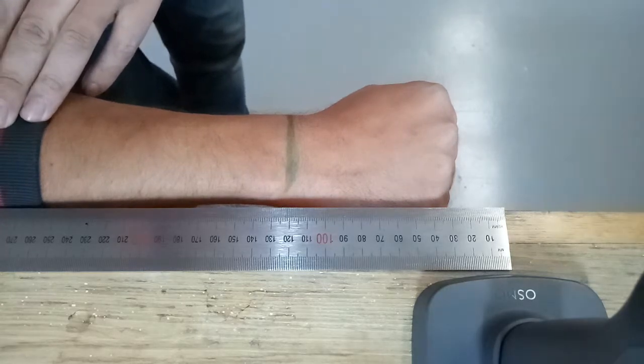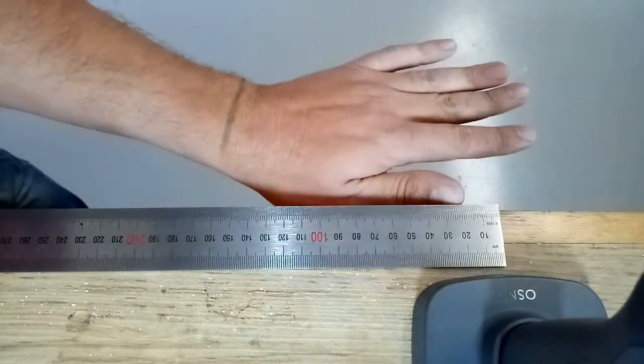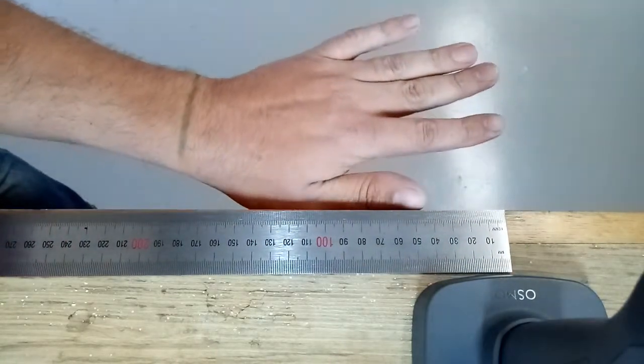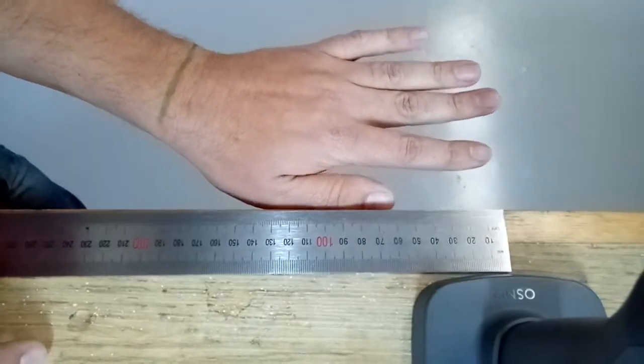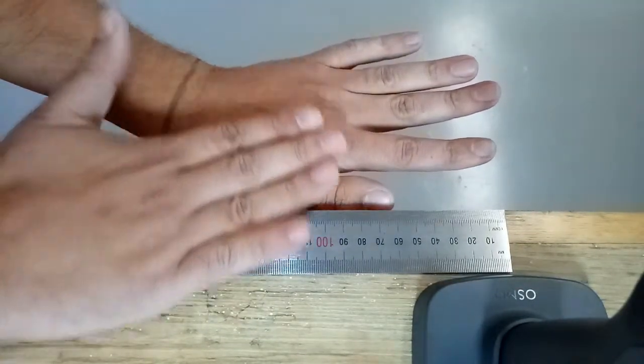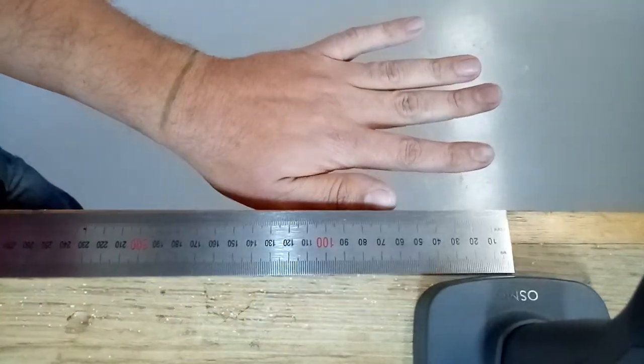For the second photo, we need the unaffected hand to understand the overall length of the 3D hand. Similarly, this needs to be at the same level as the ruler and taken from directly above.